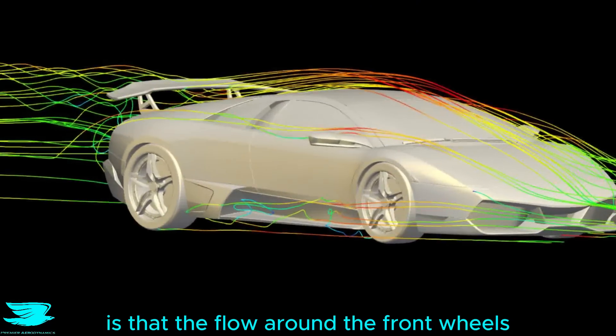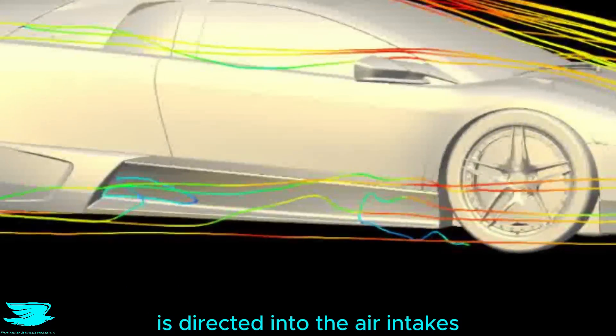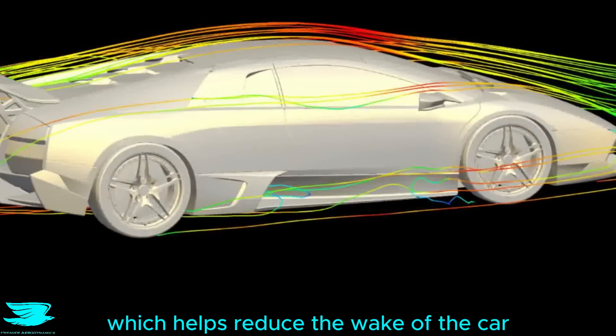Something super interesting is that the flow around the front wheels, which is quite slow moving flow, is directed into the air intakes, which helps reduce the wake of the car.